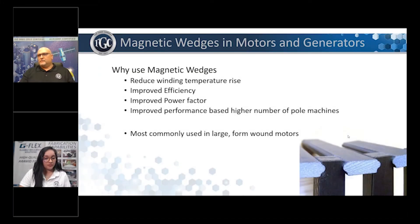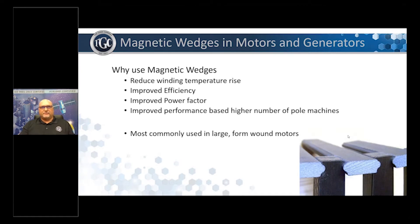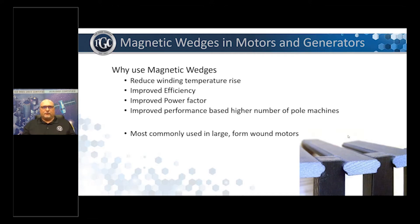So when we're looking at why we use magnetic wedges, the primary use is to improve the magnetic flux paths in the stator. With better magnetic flux in the motor, you improve many aspects of the motor's operation, as highlighted here. Magnetic wedges are commonly used in large form-wound motors and wind generators, particularly in four to eight pole machines. We'll look at some motor design examples of when we use them.